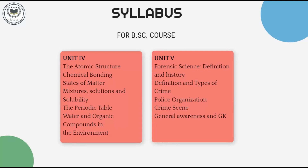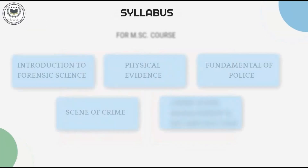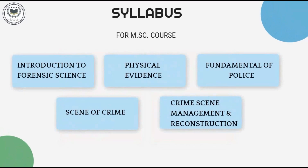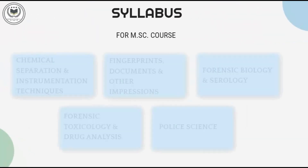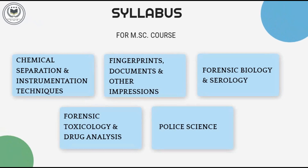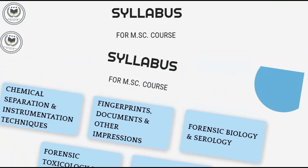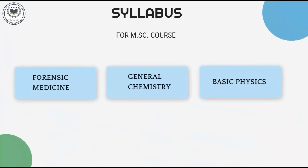Unit 5: Forensic Science — Definition and History, Definition and Types of Crime, Police Organization, Crime Scene, General Awareness and GK. For M.Sc course: Introduction to Forensic Science, Fundamentals of Police, Scene of Crime, Physical Evidences, Crime Scene Management and Reconstruction, Chemical Separation and Instrumental Techniques, Fingerprints, Documents and Other Impressions, Forensic Biology and Serology, Forensic Toxicology and Drug Analysis, Police Science, Forensic Medicine, General Chemistry, Basic Physics.